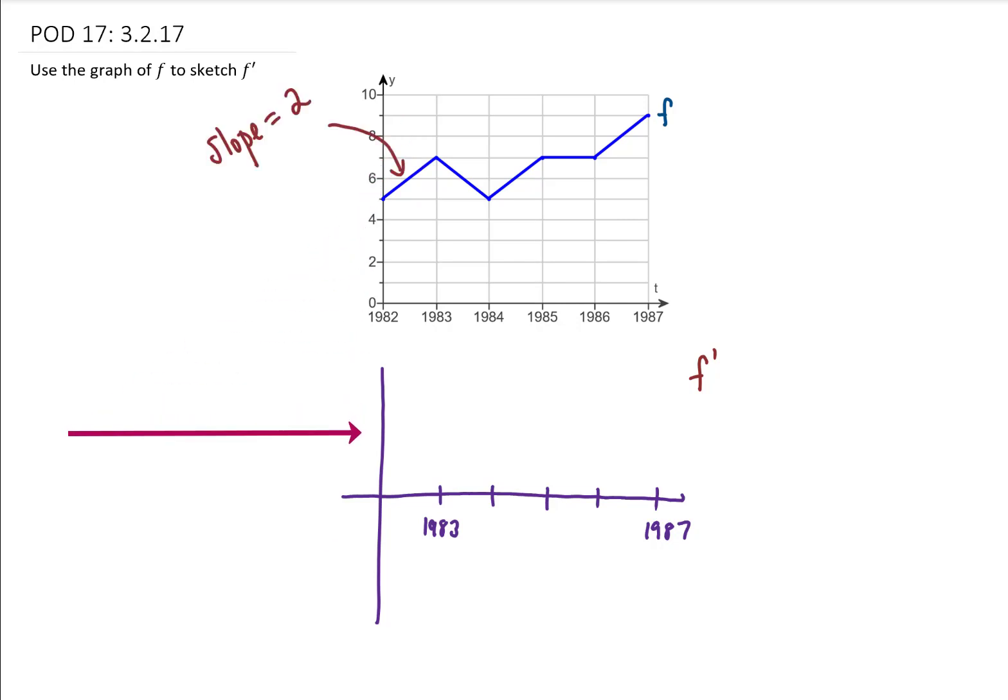What that means for our derivative is that the actual function value, or y value on our derivative, is going to be 2 between 1982 and 1983. That means our derivative is just going to look like this. Now, right here at 1983, our derivative changes, so I'm just going to put an open circle here.